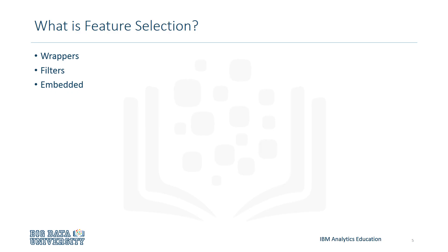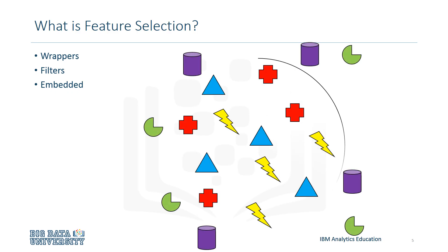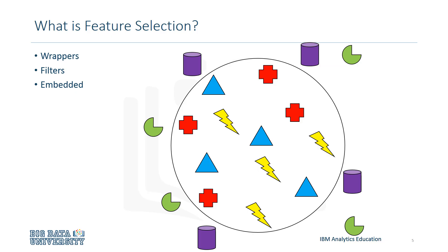To help you visualize how Feature Selection works, imagine a set of variables. Let's use a series of shapes, with each shape representing different dimensions or features. By ignoring the irrelevant variables, or selecting the ones that improve accuracy, we reduce the amount of strain on the system and produce better results.